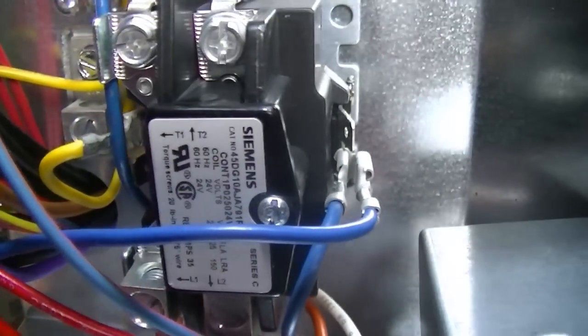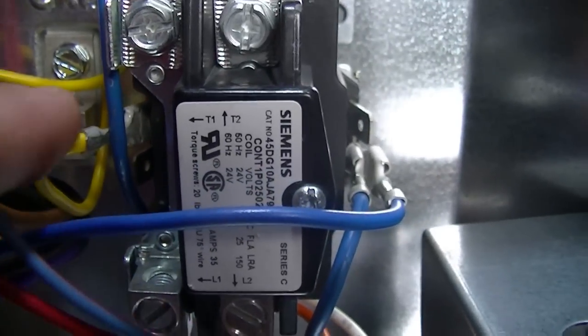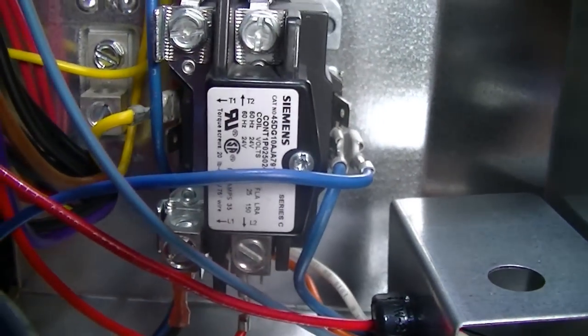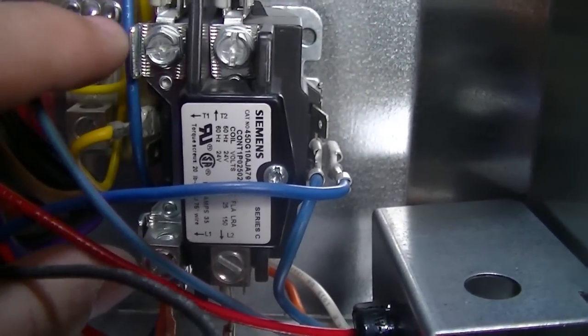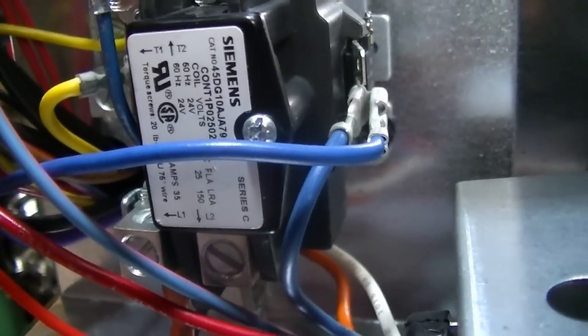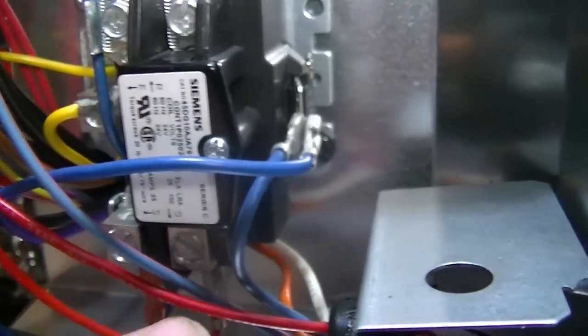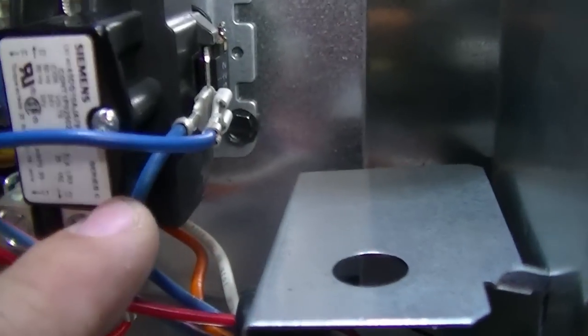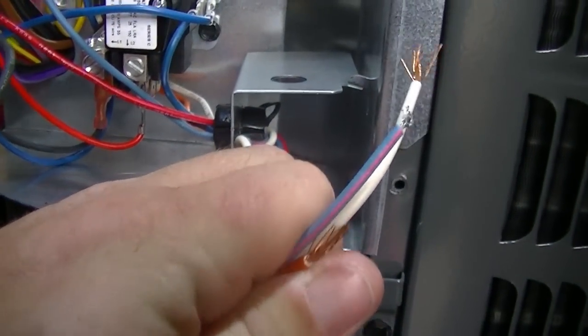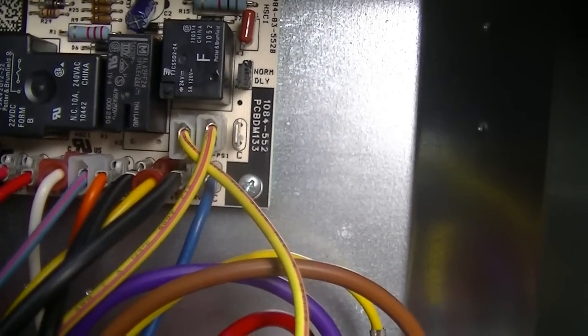On either side of the contactor, there's low voltage wires. We have one yellow here, two blues on this side. Sometimes on the contactor, they'll both be on one side. The Honeywell was like that. The blues on this side are common, common side of 24 volts. One of them is running directly out to the field wiring here. The other one is going all the way up here to the defrost control board.